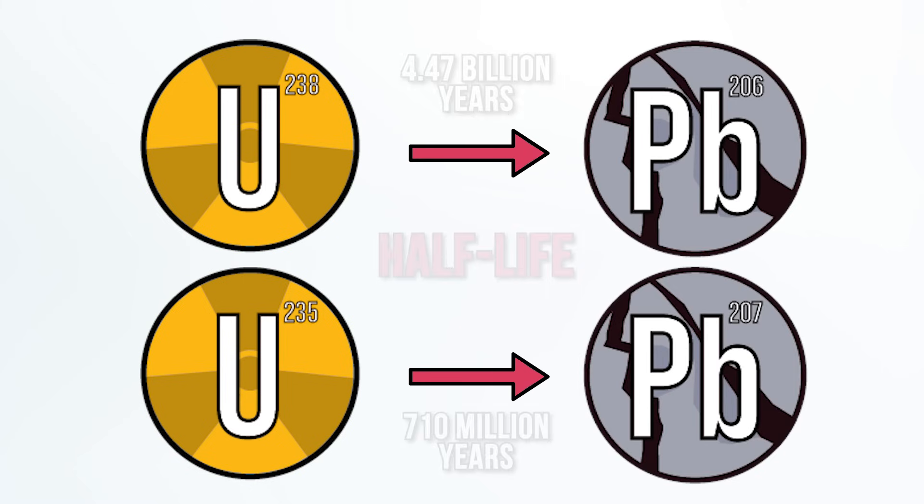The most reliable method takes advantage of the fact that some minerals contain small amounts of the radioactive element uranium, which decays to lead. Uranium is composed of two isotopes, uranium-238 and uranium-235. Both isotopes are radioactive and decay to different isotopes of lead at different known rates.